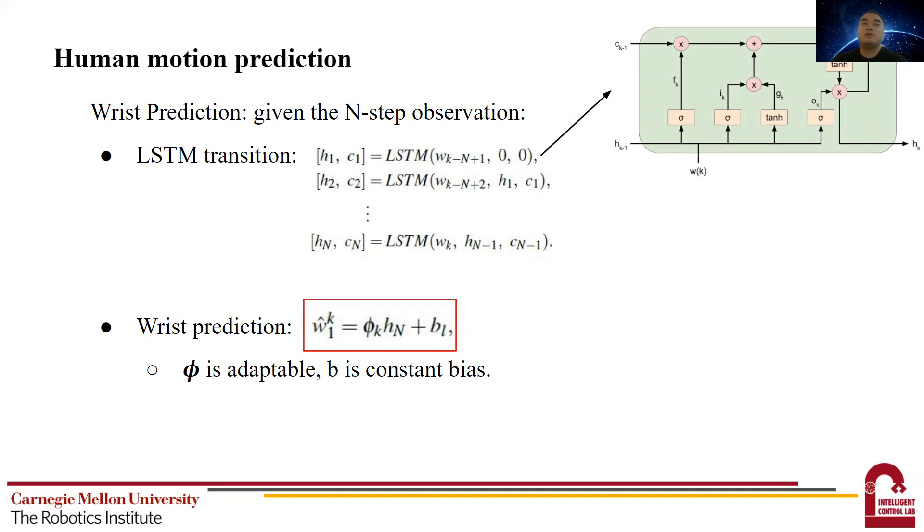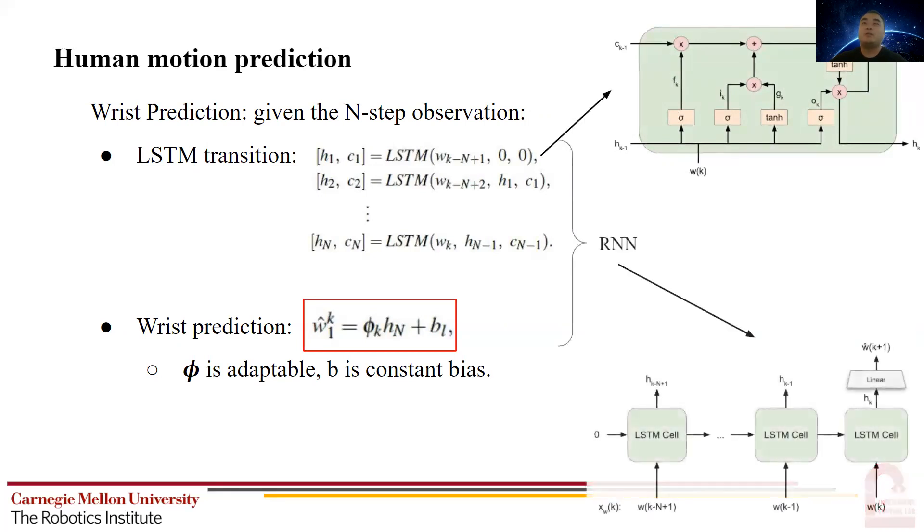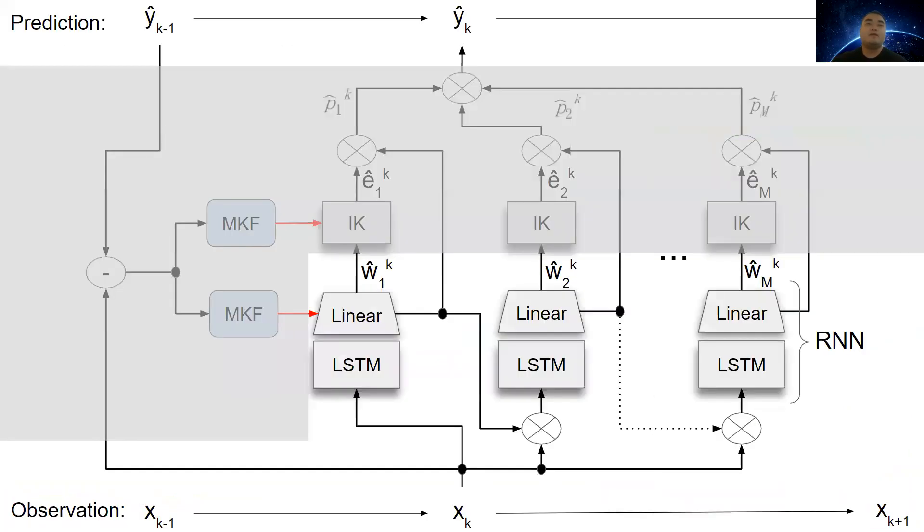Then the first step wrist prediction is obtained using a linear layer connected to the last LSTM cell. The linear layer can be represented in this equation. B phi is the parameter matrix, and B is a constant bias. And we use RNN to denote the combination of the LSTM and the linear layer. And the unfolded RNN structure can be visualized in this bottom right picture.